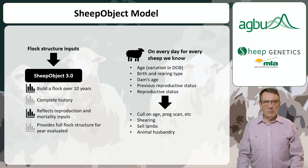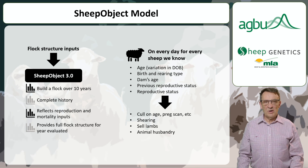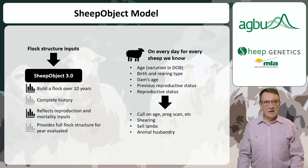Our new model operates at the animal level, building a complete flock history over a 10 year period. Then we evaluate performance in the final year, tracking what happens to each animal on every day of the year. With detailed information about each animal's age, birth rearing type and reproductive status, we can then simulate various scenarios effectively.